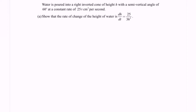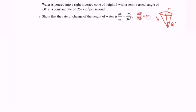So given the situation: water is poured into a right inverted cone. We have a right inverted cone of height H with a semi-vertical angle of 60 degrees. Notice that we have R as well for the radius. The water is poured at a constant rate of 25π cm³ per second, meaning that dV/dt equals 25π.